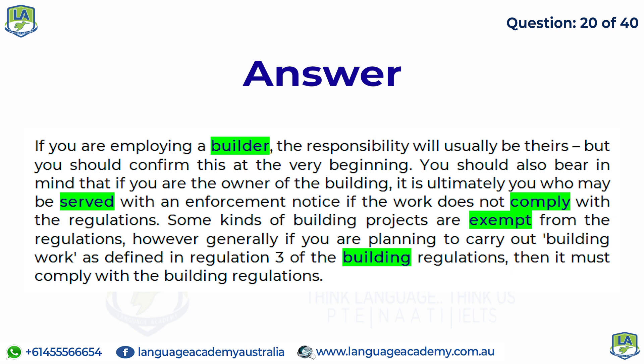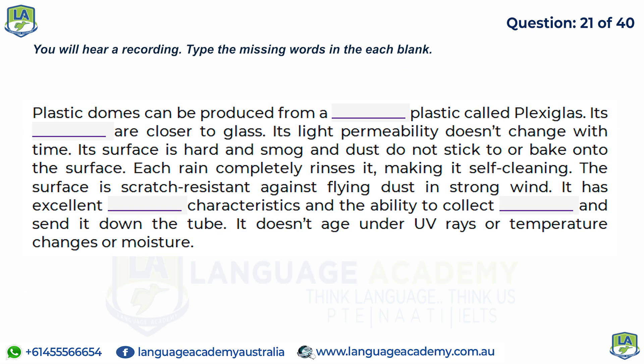Plastic domes can be produced from a quality plastic called plexiglass. Its qualities are closer to glass — its light permeability doesn't change with time, its surface is hard, and smog and dust do not stick to or bake onto the surface. Each rain completely rinses it, making it self-cleaning. The surface is scratch-resistant against flying dust in strong wind. It has excellent optical characteristics and the ability to collect sunlight and send it down the tube. It doesn't age under UV rays, temperature changes, or moisture.